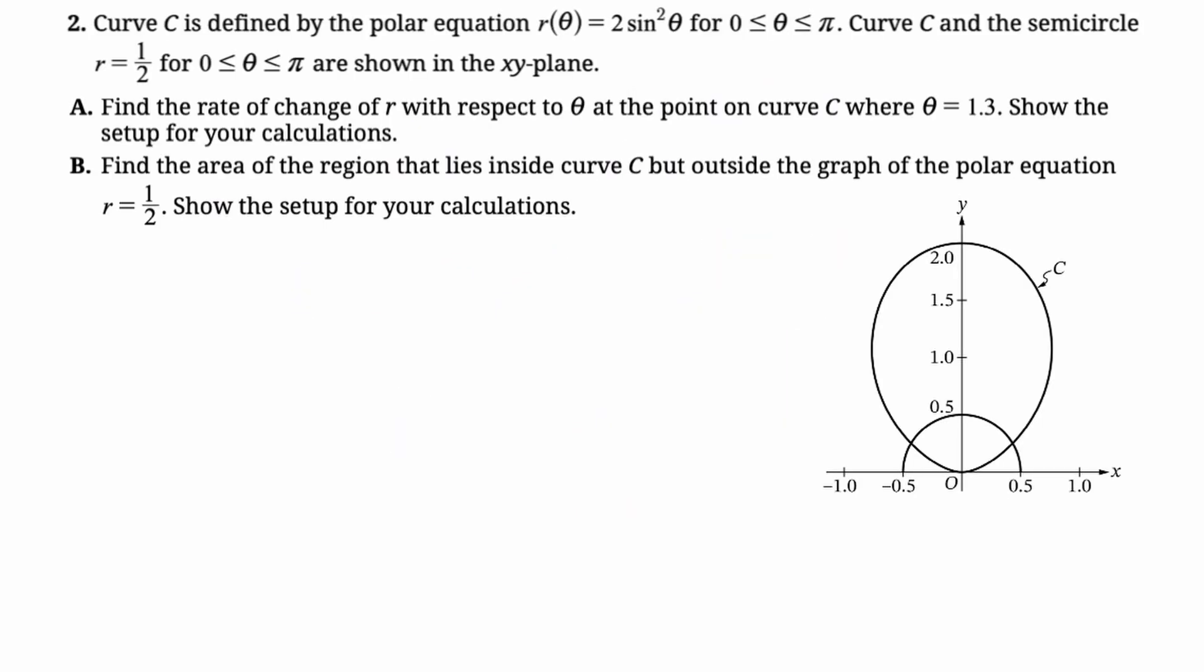In this video we're going to be doing number two from the 2025 Calc BC exam. It is a polar question for the first time in ages. Let's take a look. The curve C is defined by the polar equation r of theta equals two sine squared of theta between zero and pi. Curve C and the semicircle r equals one half between zero and pi are shown in the xy plane.